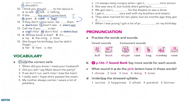Question fourteen: 'Whose book is that?' — 'It is mine.' We use possessive pronouns: 'mine'. Question fifteen: 'She forgot his birthday but he didn't forget...' — we use 'hers'. These are possessive pronouns: mine, yours, his, hers. So 'he didn't forget her birthday', or we can just say 'hers'.